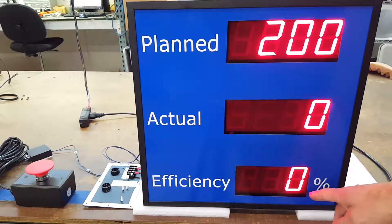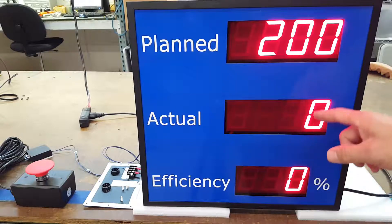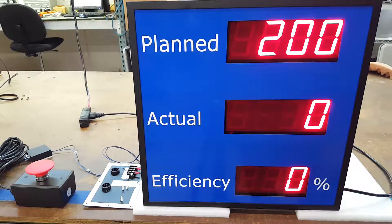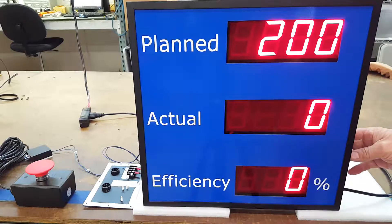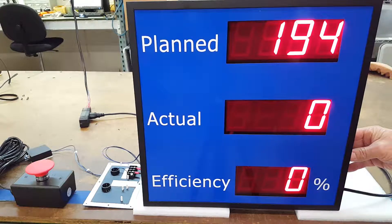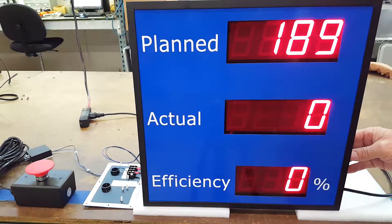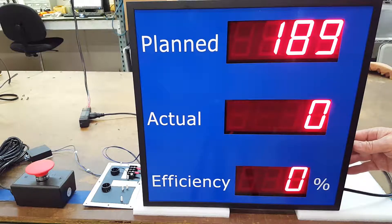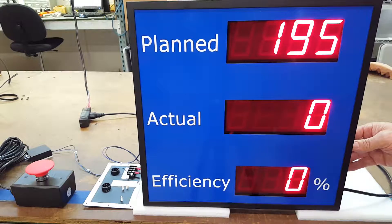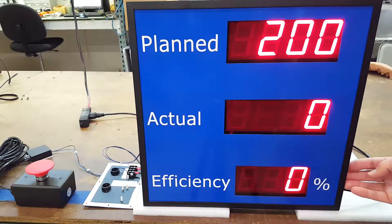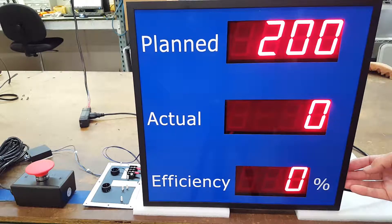Obviously you don't get an efficiency percentage until you have an actual count. You can decrement the planned value here too on the side with an environmentally switched push button. You can also reset to zero by pushing reset and holding for three seconds.